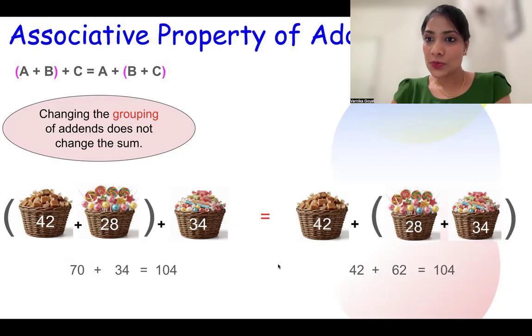Why is this property called associative? Associative means to make groups. Hence this name comes from making groups or associative.